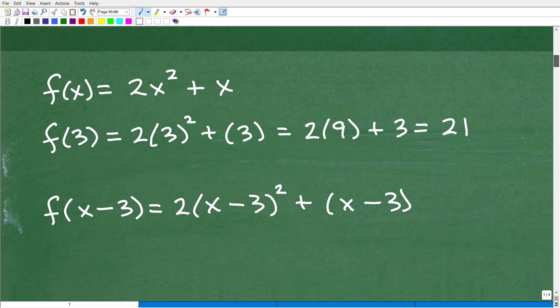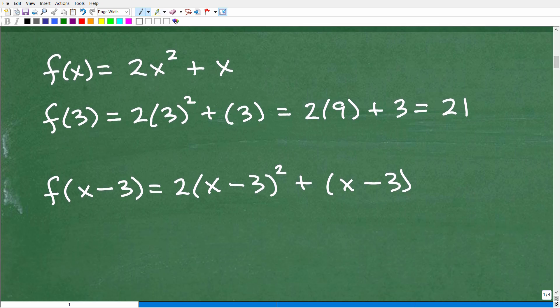All right, so first things first, let's take a look at our function. We have f of x equals 2x squared plus x. So let's evaluate this function for 3. Let's find f of 3. So what does that mean? Well, it means that here, this is an x, right? I have an x here, an x here. So when we have f of 3, basically what we're saying is, replace all the x's with 3, and then just simplify it.